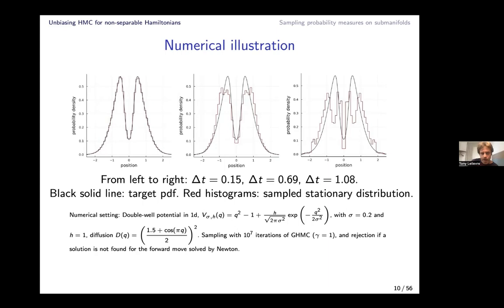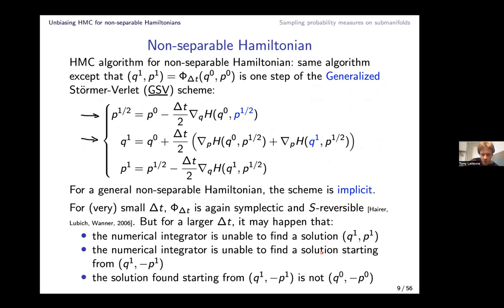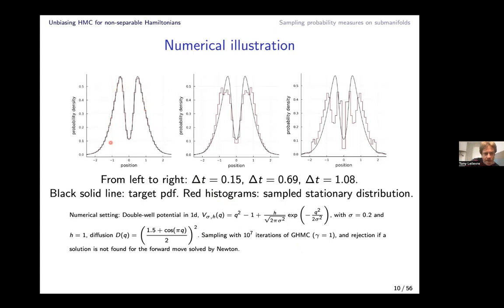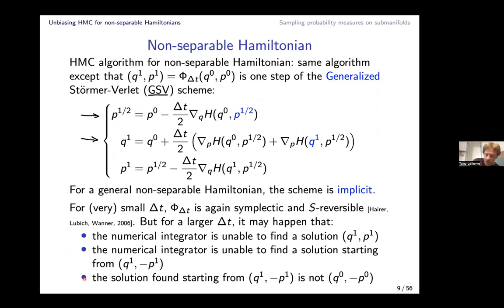This is illustrated in a simple 1D example using the generalized HMC algorithm without any correction: when you cannot find a solution you just reject. With a very small time step, the histogram after 10⁷ steps is very close to the target (black solid line). But increasing the time step, the empirical distribution drifts further from the target — a clear bias induced by violated S-reversibility or forward/backward failure.